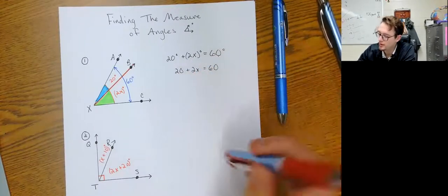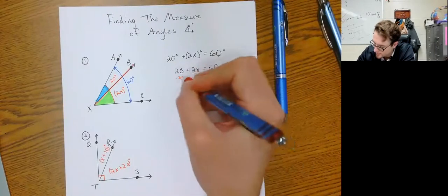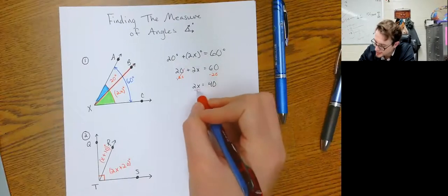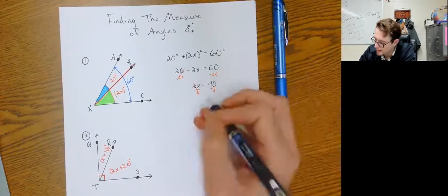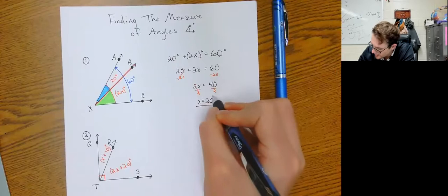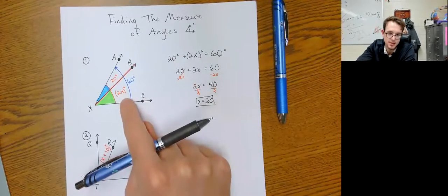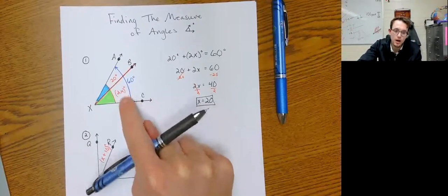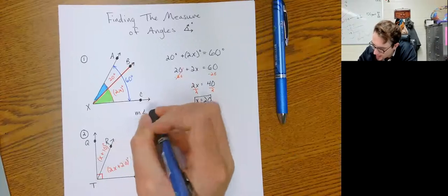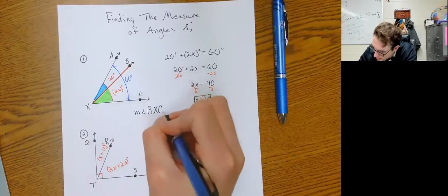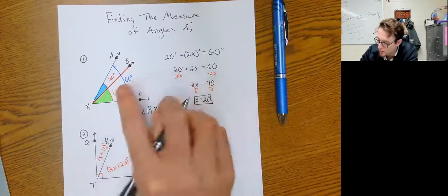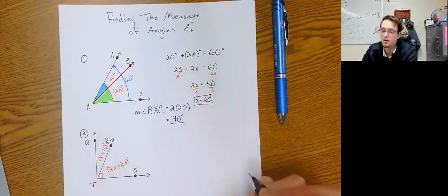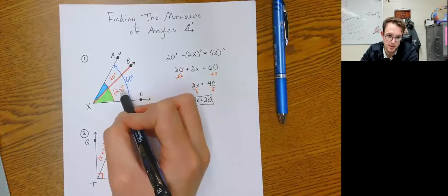Now we can solve. Subtract 20 from both sides — we get 2x equals 40. Divide both sides by 2 and we get x equals 20. That's kind of the first half of the problem. The question is asking for the missing angle measure. I want to know what is the measure of angle BXC. We now know it is 2 times 20, which equals 40 degrees, by substituting in what x is.